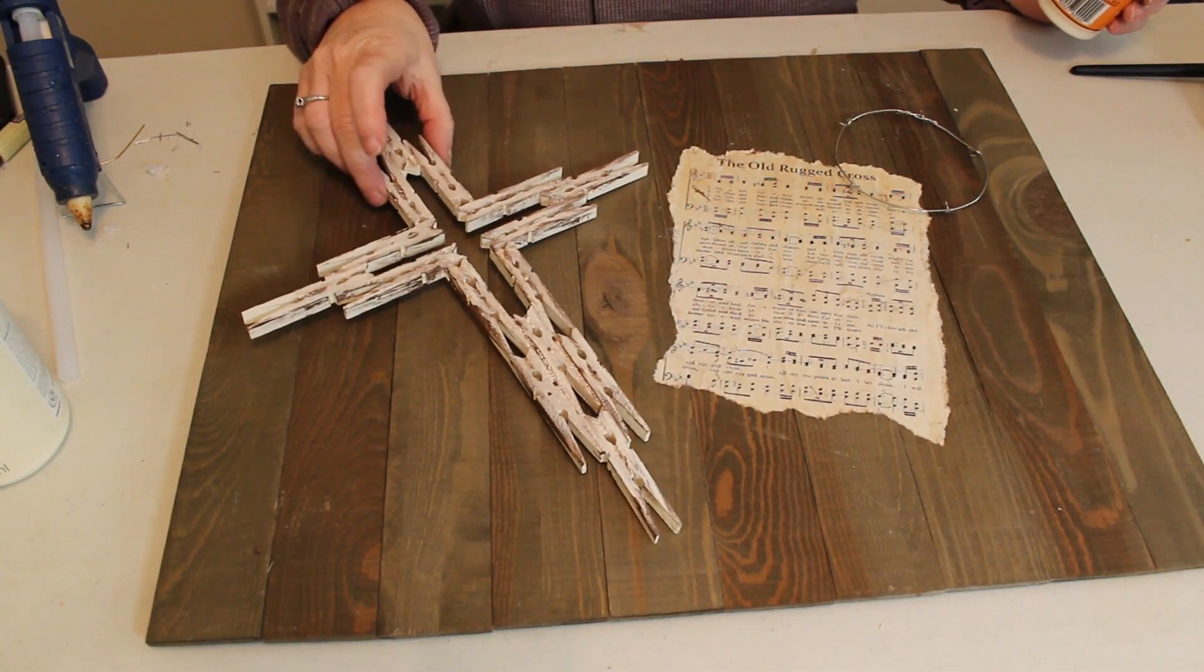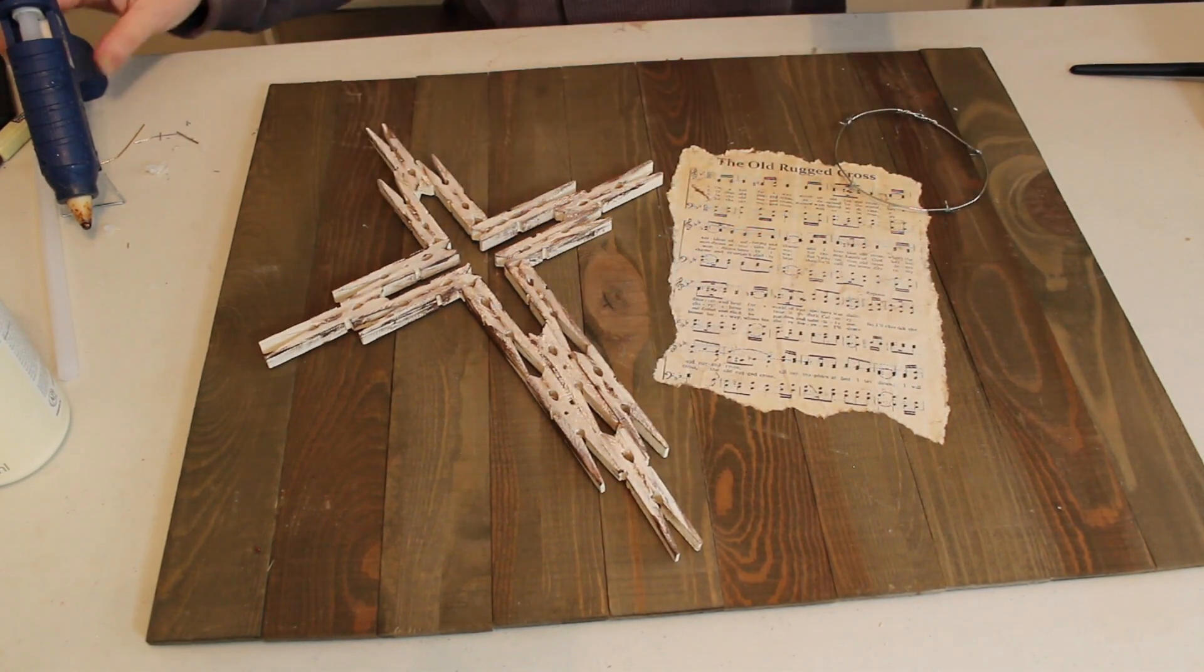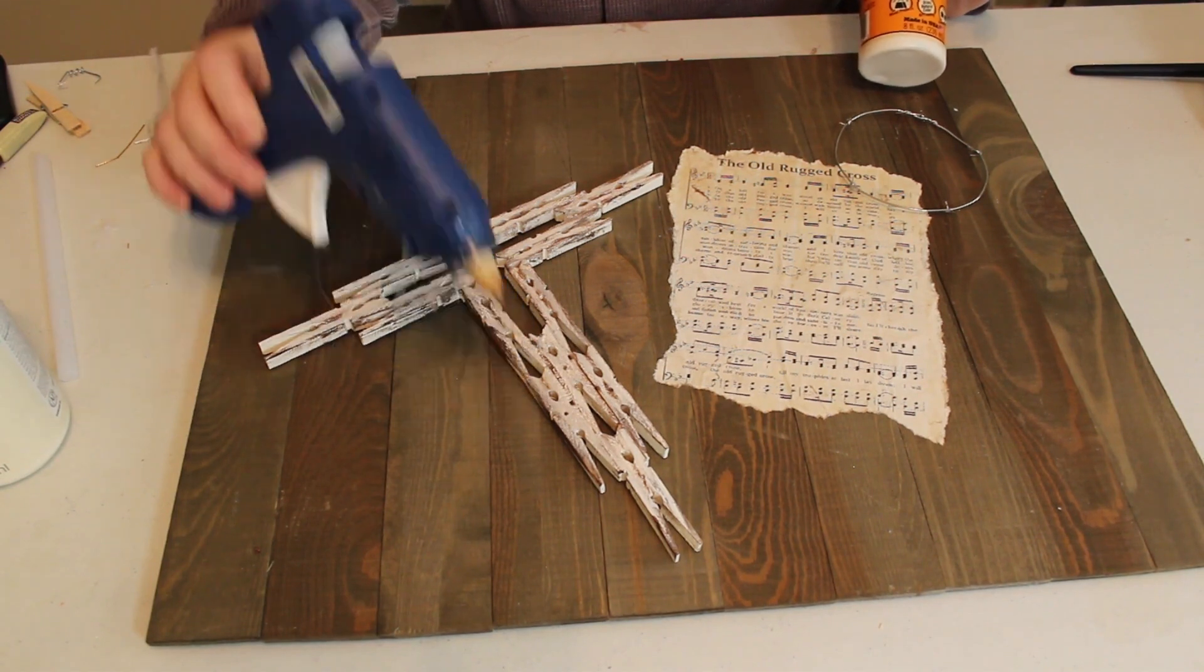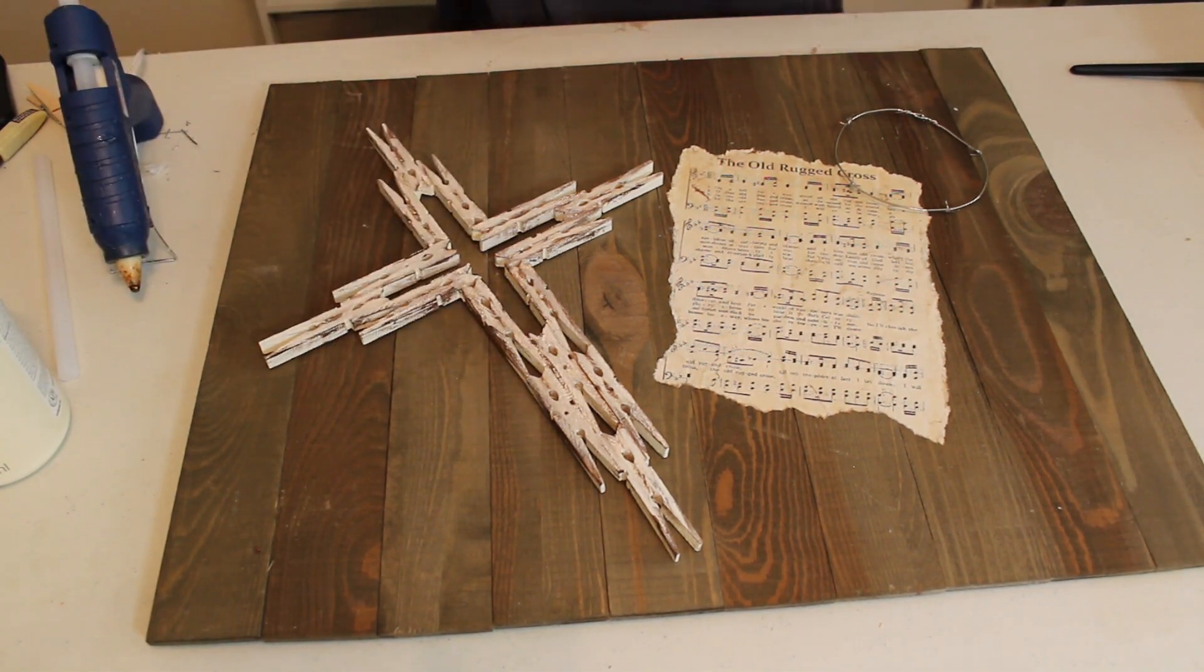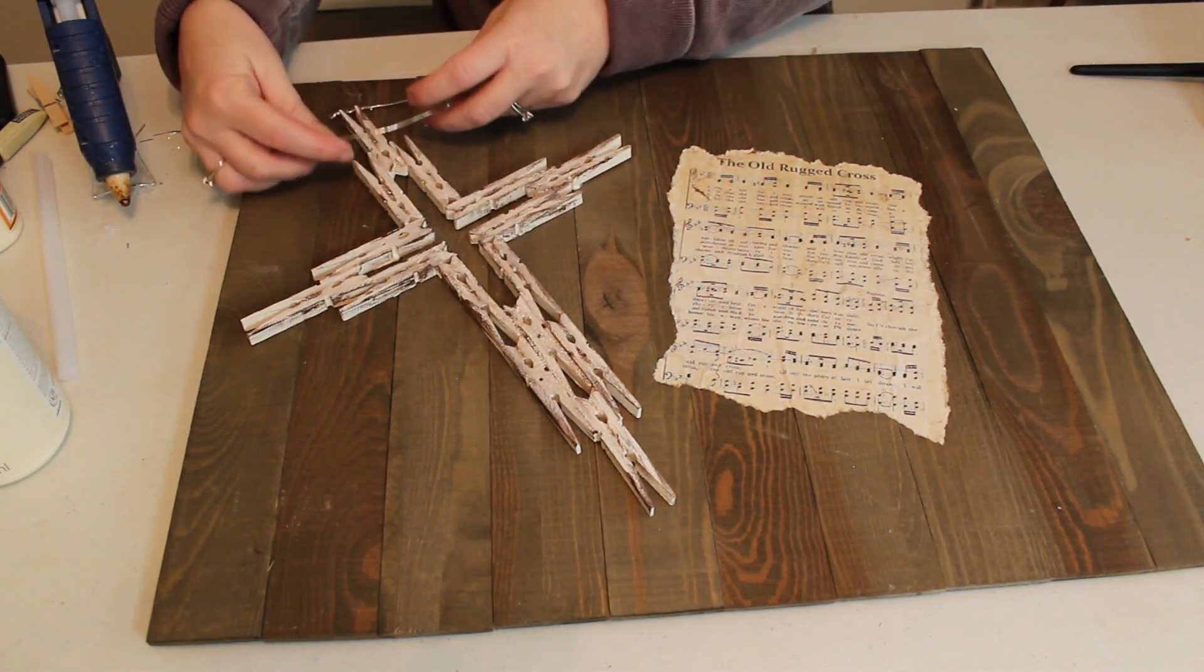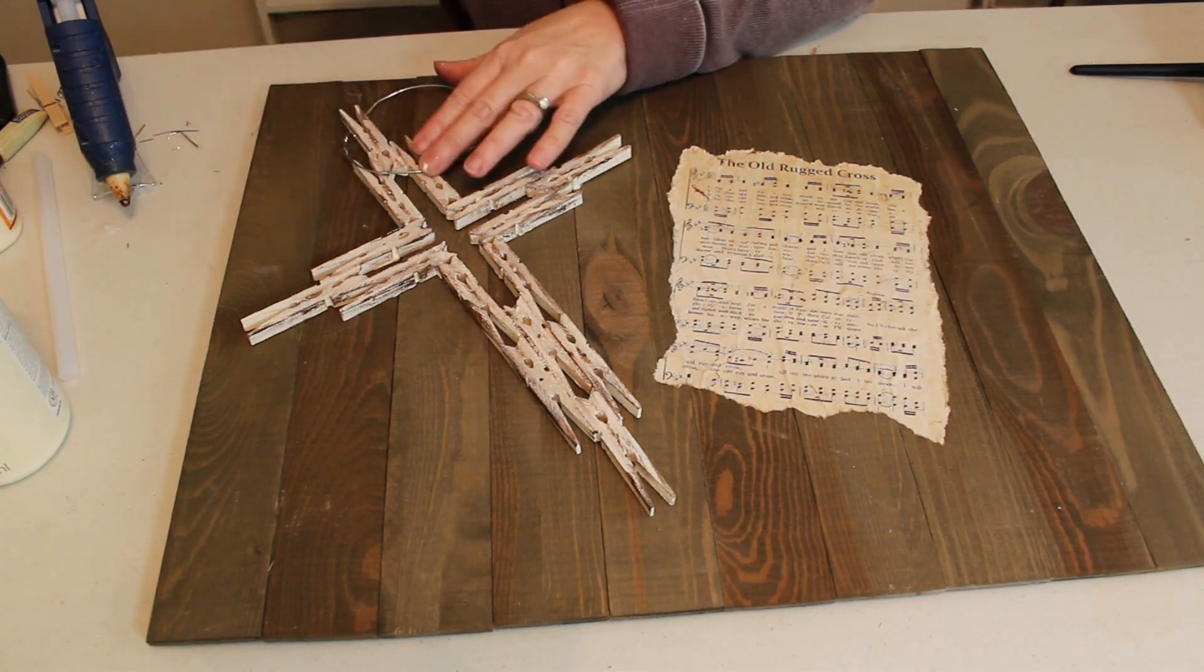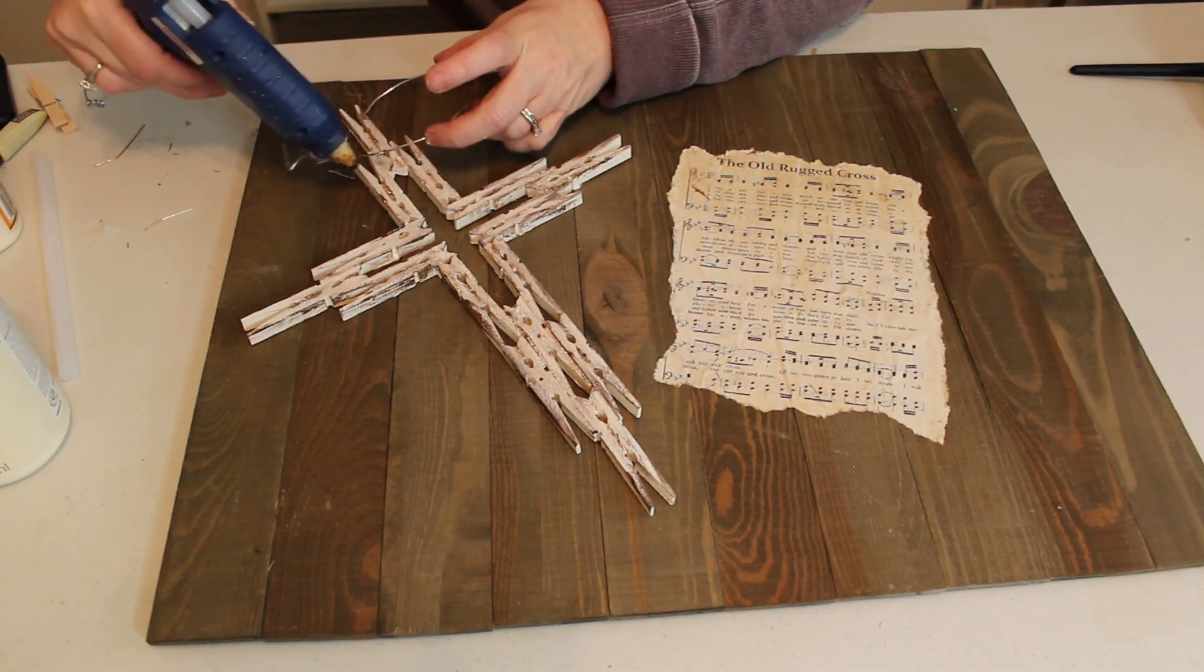To attach my cross to the palette I'm going to use some of my wood glue and then I'm also going to use hot glue to help it stick immediately. Now I'm going to take my barbed wire crown of thorns and I'm going to loop it around the top of the cross and then I'm just going to use a dab of glue to hold it in place.